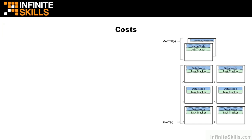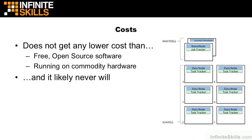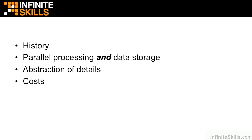In addition to providing a well-written abstraction layer for developers and a good fault-tolerant architecture, one of the big reasons Hadoop has seen such widespread adoption is the cost involved. It simply doesn't get any cheaper than free and open-source software running on commodity hardware. For anyone saying Hadoop is just a fad, just realize that it probably will never get more cost-effective than this — if another project comes along to replace Hadoop, it's going to have to do the same thing. In this chapter, we took a high-level overview of the Hadoop approach: the history, how it's both a parallel processing and data storage engine, how it abstracts out details for developers, and the costs involved.